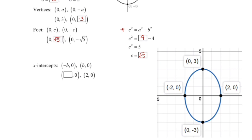Our x-intercepts are (−2, 0) and (2, 0). So our foci are somewhere approximately at those positions on the vertical ellipse.